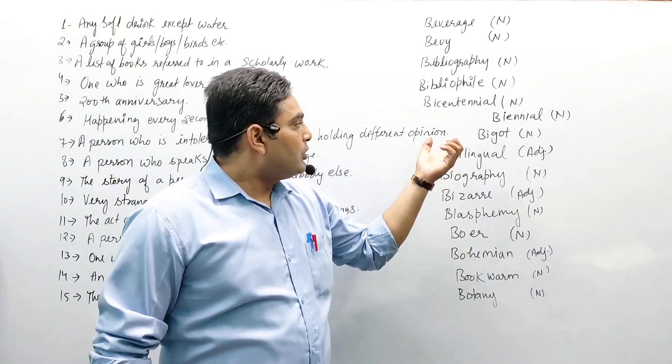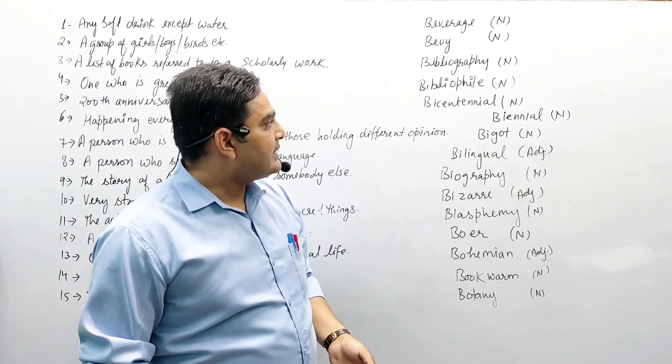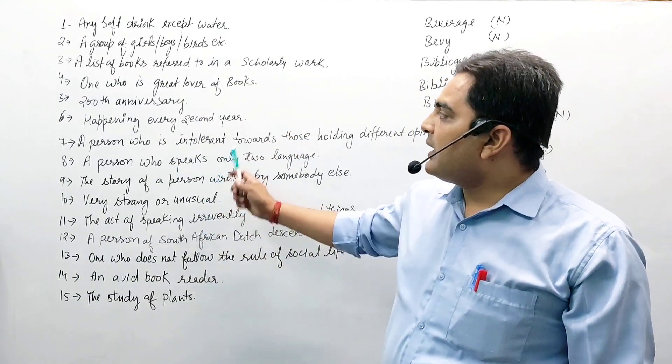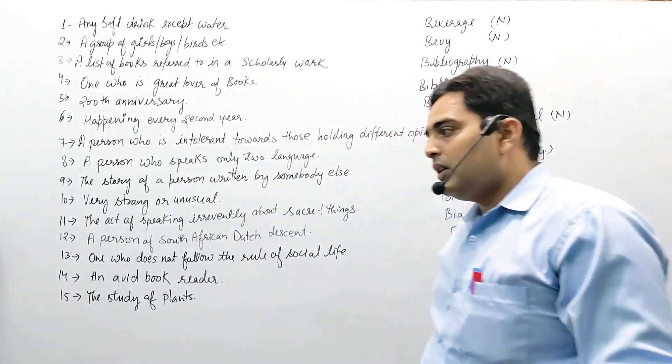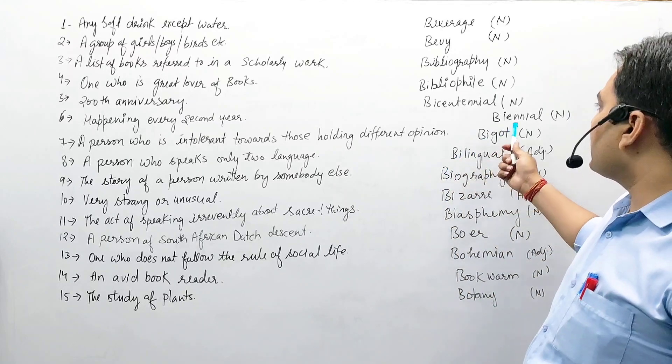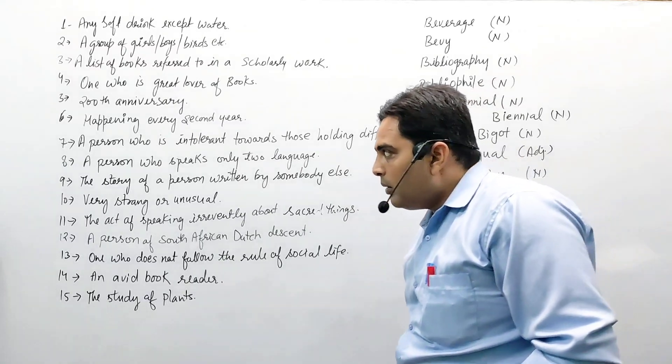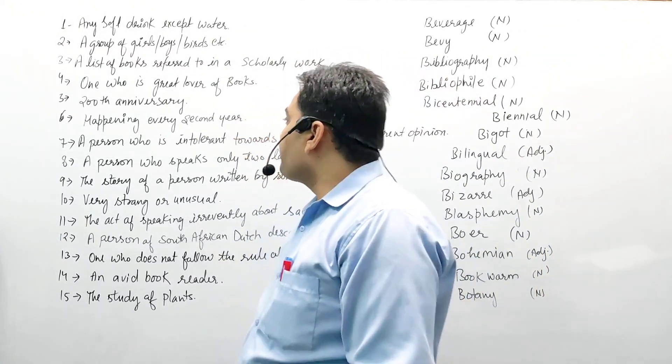Next comes bicentennial. Next comes happening every second year, every two years or after two years. It is called biennial. Biennial is also your noun.